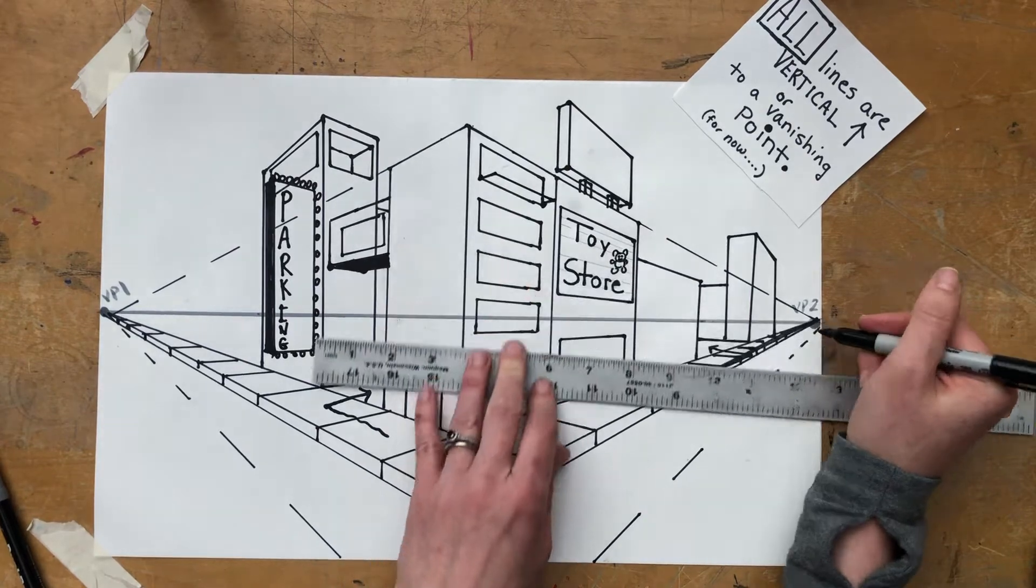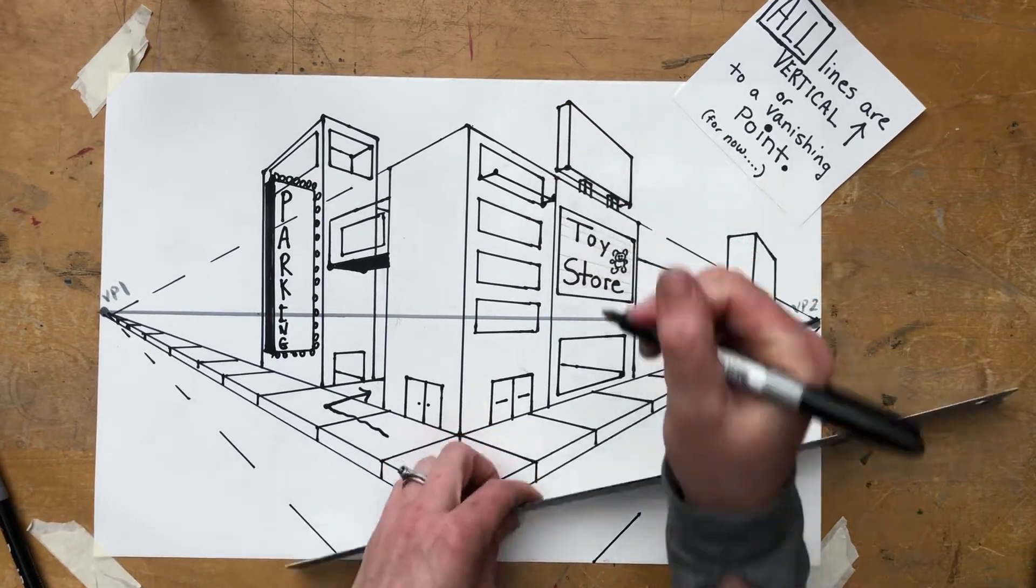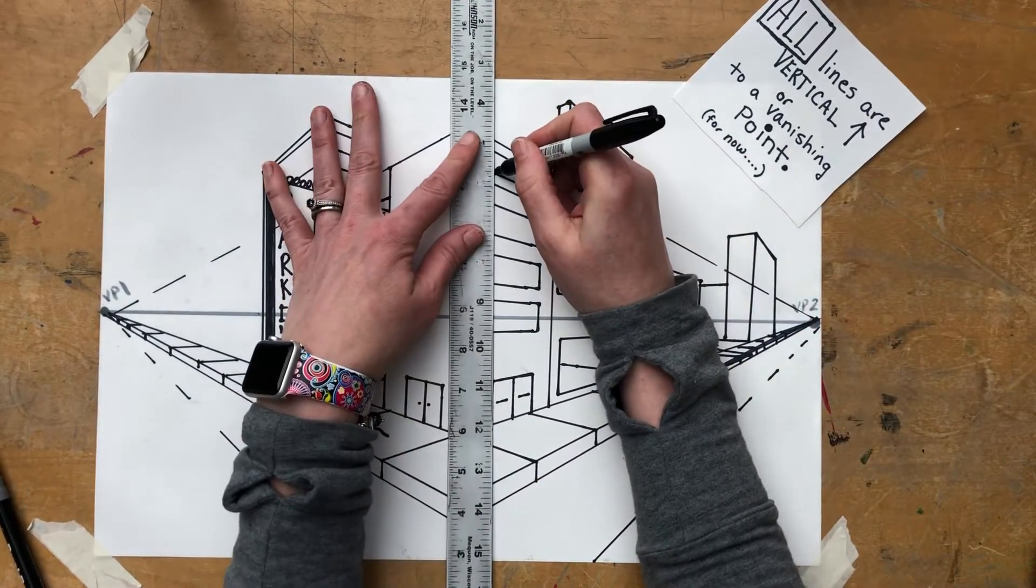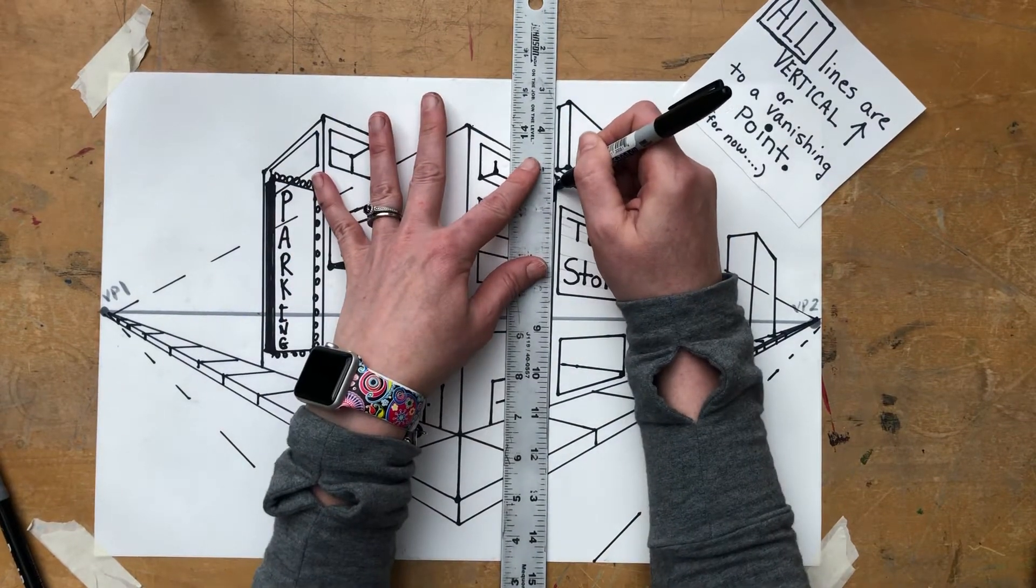Now I go to VP2, here's a dot, here's a dot. If I go vertical up from there, there's a balcony.